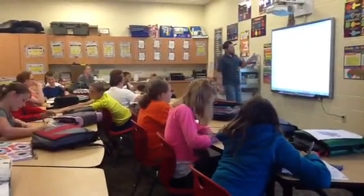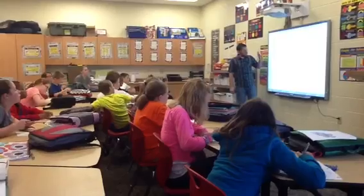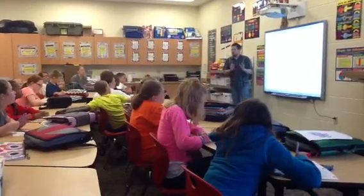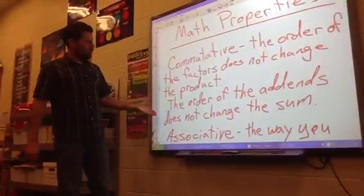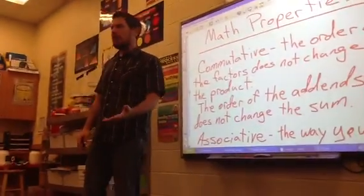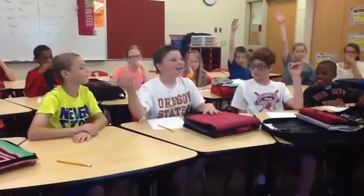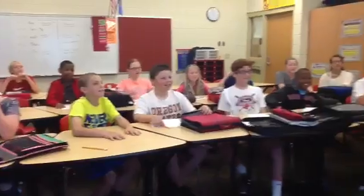Okay, class. So the commutative property — it just says the order of the factors does not change the product. And we're doing that with multiplication. In addition, the order of the addends does not change the sum. It's really easy. Does that make sense? Kellen, you have a question? Yeah, Mr. B, I don't get it. Me neither. Guys, it's simple.